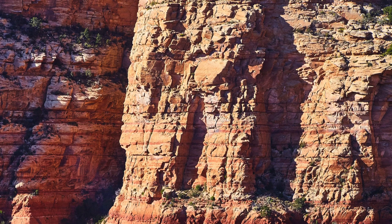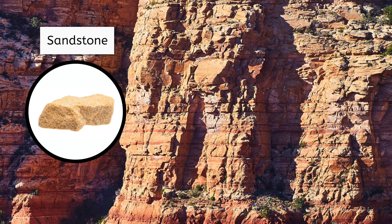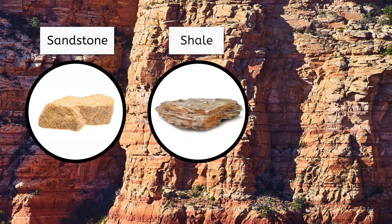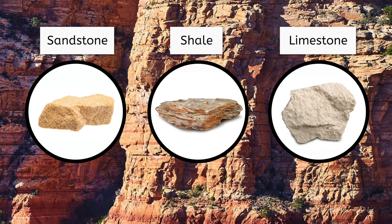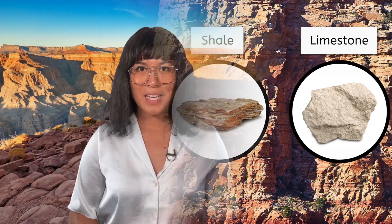For example, layers of sand usually cement together to form sandstone, which is common here in the Grand Canyon. Layers of mud can become shale, and layers with a lot of shells or coral can turn into limestone. This variety in sedimentary rocks is what makes places like the Grand Canyon so fascinating — it's like being able to read a really, really old and exciting story written in stone. Next up, Jenny's going to tell us all about metamorphic rocks.